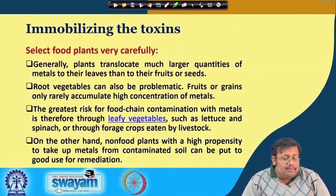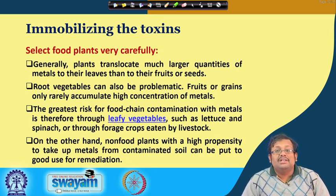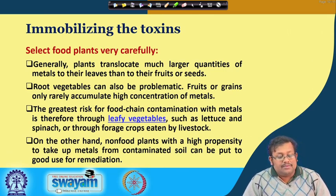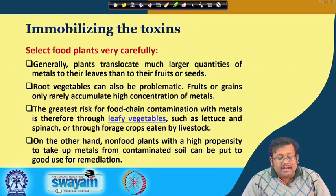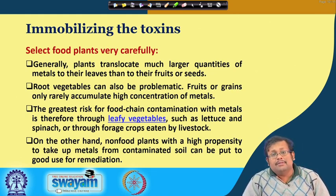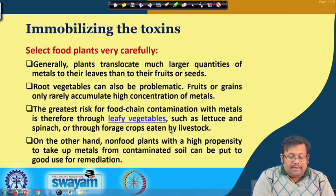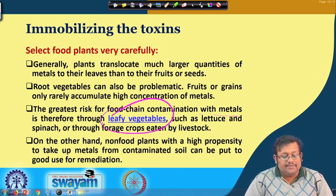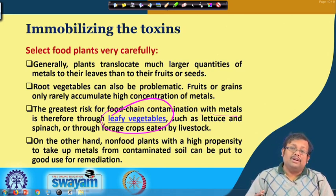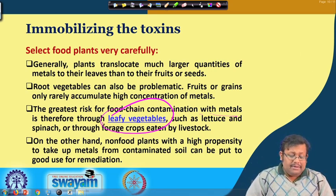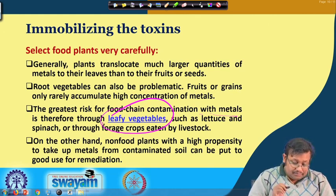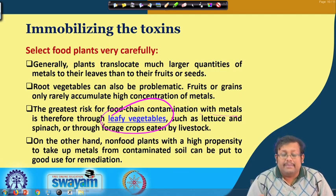We can also select food plants carefully. Plants generally translocate much larger quantities of metals to their leaves than to their fruits or seeds, and root vegetables can also be problematic. The greatest risk of food chain contamination with metals is therefore through leafy vegetables such as lettuce and spinach, or through forage crops eaten by livestock, because metals get highly accumulated in leafy vegetables. On the other hand, non-food plants with a high propensity to take up metals from contaminated soil can be used for phytoremediation.